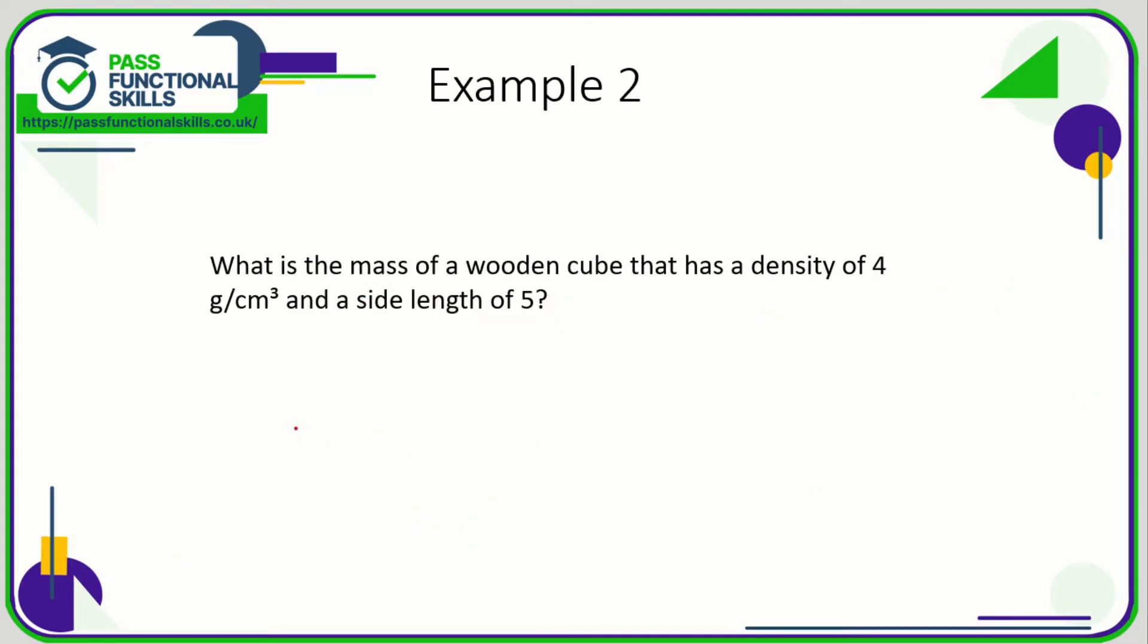Here we're trying to work out the mass, so density is mass over volume, or density is mass divided by volume. If I move the divided by volume over to the other side, density multiplied by the volume equals the mass. The density is 4 and we want the volume. Again it's another cube with a side length of 5, so the volume of the cube is going to be 5 times 5 times 5 which is 125. So our calculation now is 4 times 125 which is 500 grams.